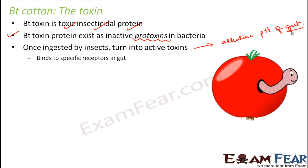Once activated, the toxin binds to specific receptors in the gut — receptors are molecules that can receive or bind to other molecules. As soon as it binds to these specific receptors, the insect will stop eating, since the digestive tract is closely linked to the eating process. Over time, with no food intake, no energy is produced. Eventually the gut wall breaks down, meaning the wall of the digestive tract is destroyed, and as a result the insect will die.